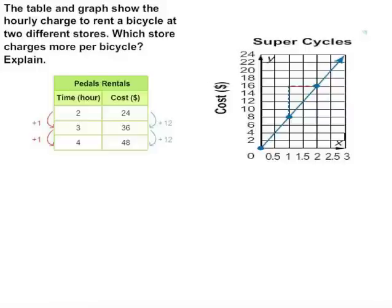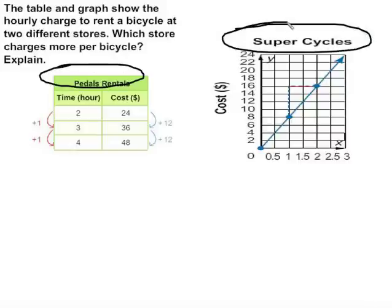Well let's keep going. So here you have a situation where you have a table compared to a graph. And the table and the graph show the hourly charge to rent a bicycle at two different stores. Which store charges more per bicycle? So we have Pedals Rentals and we have Super Cycles. Well Pedals is already done for us. We know that at two hours they charge you a $24 rental fee, three hours, 36, 4, 48. And they even told us that that means that we're increasing by one hour for every $12 that we pay.